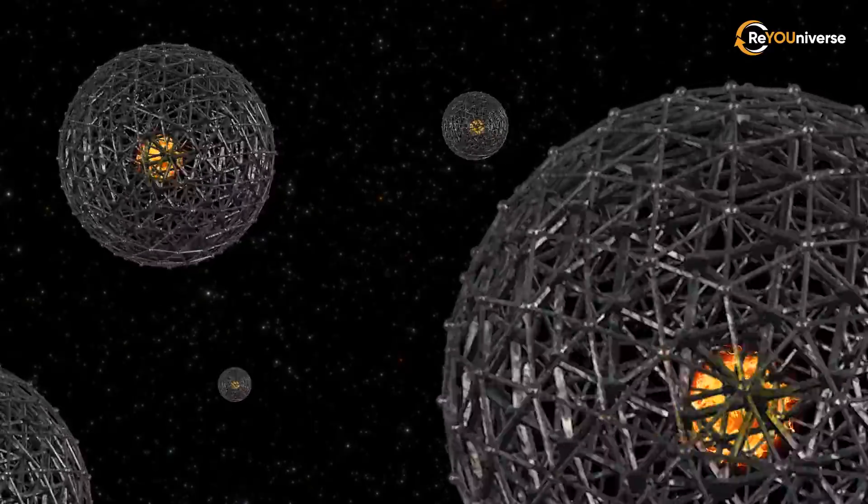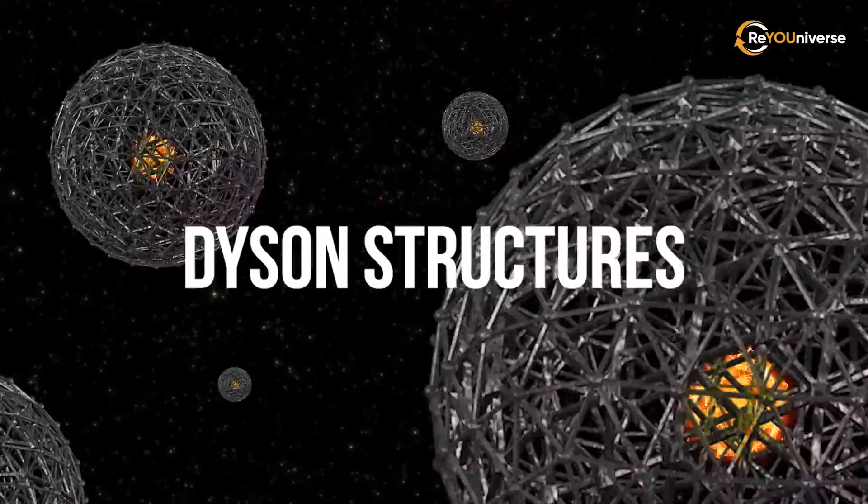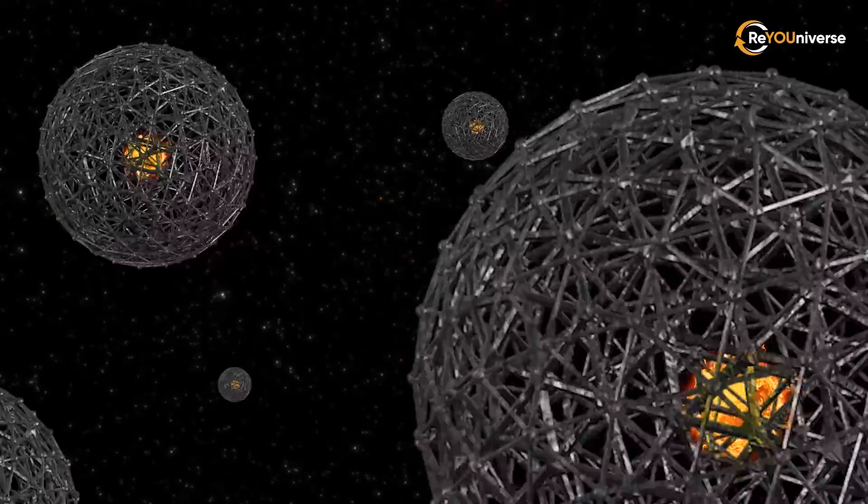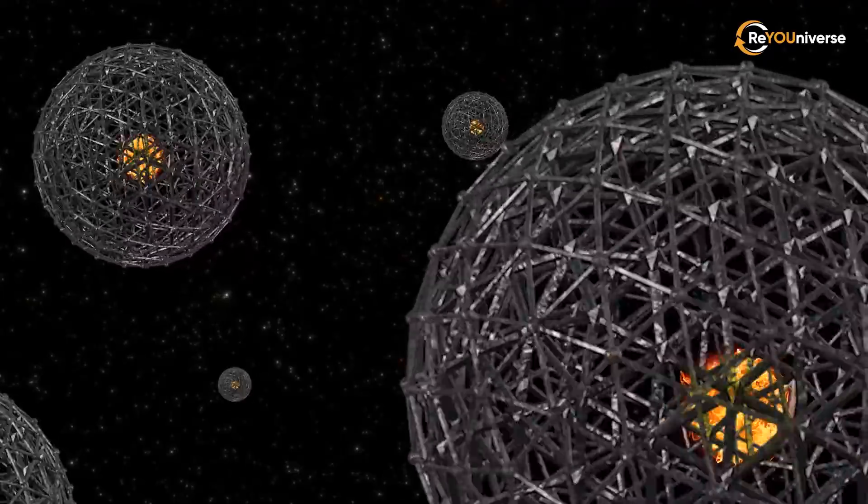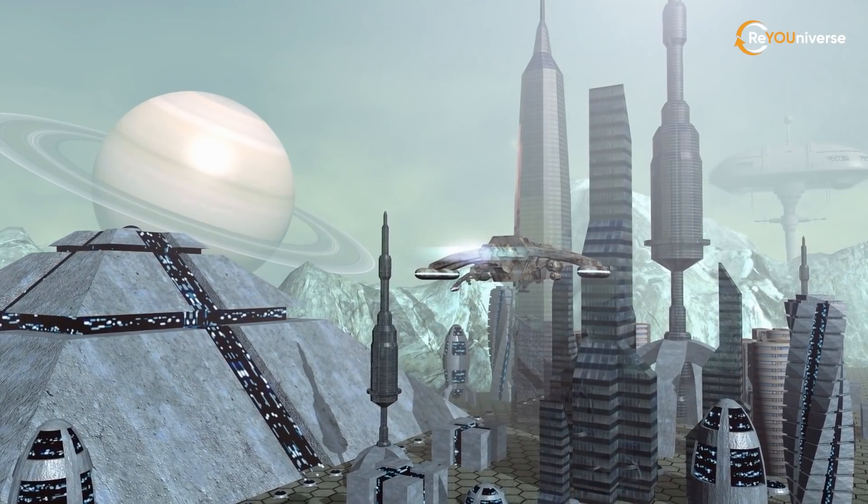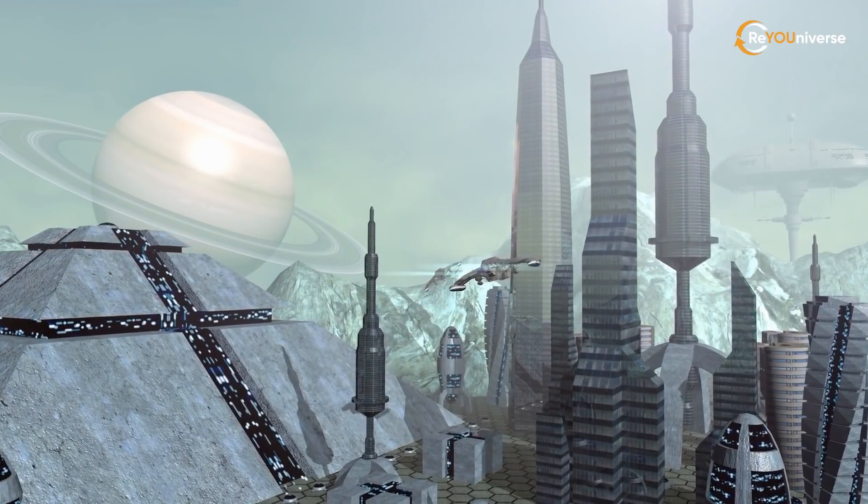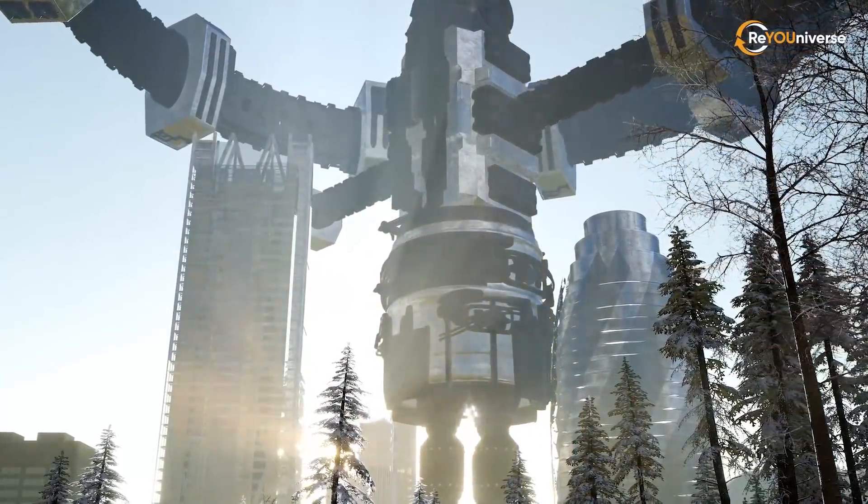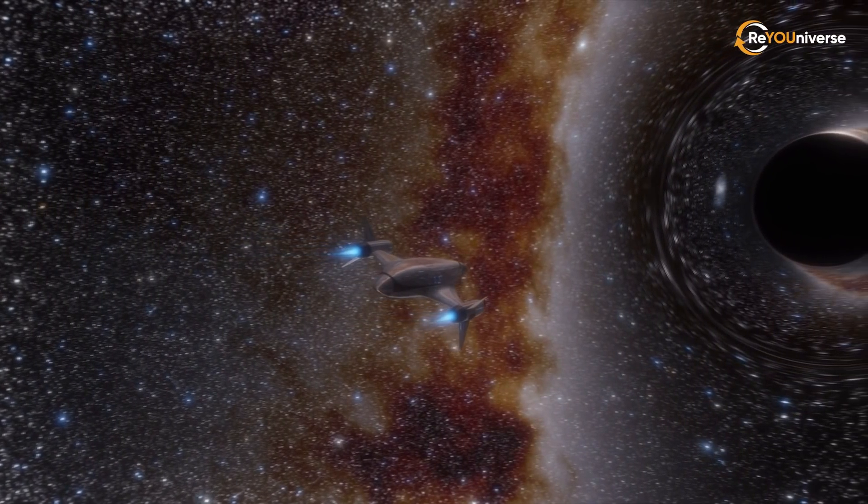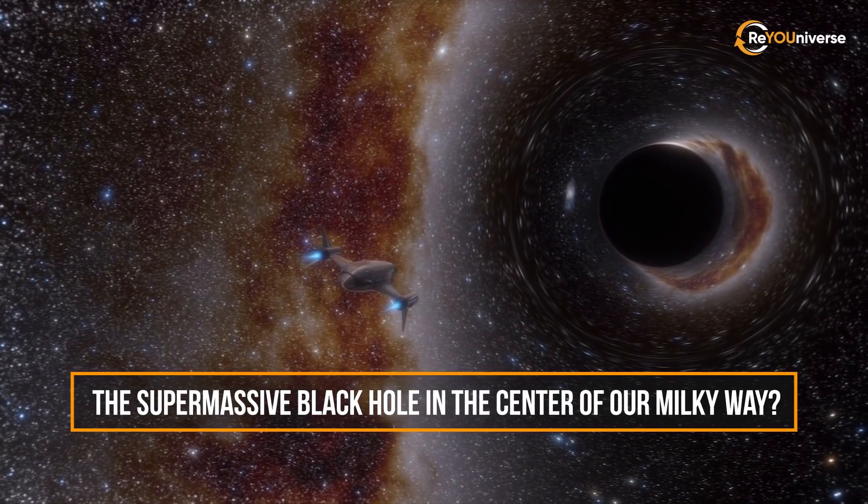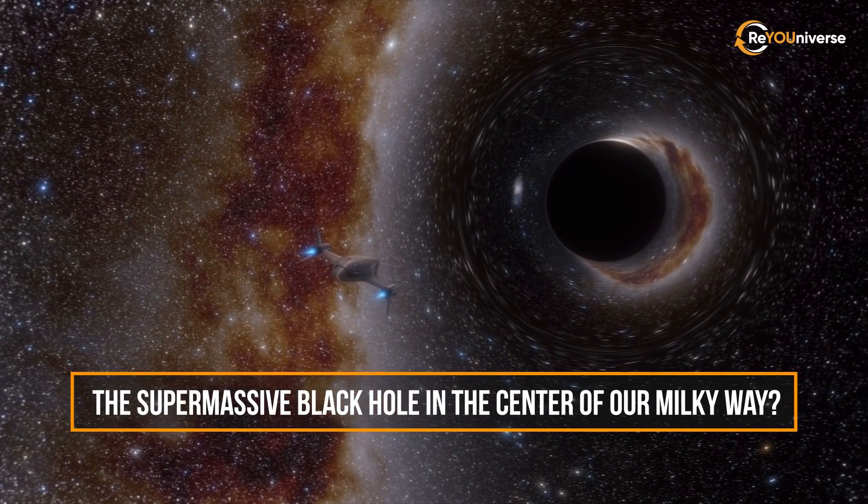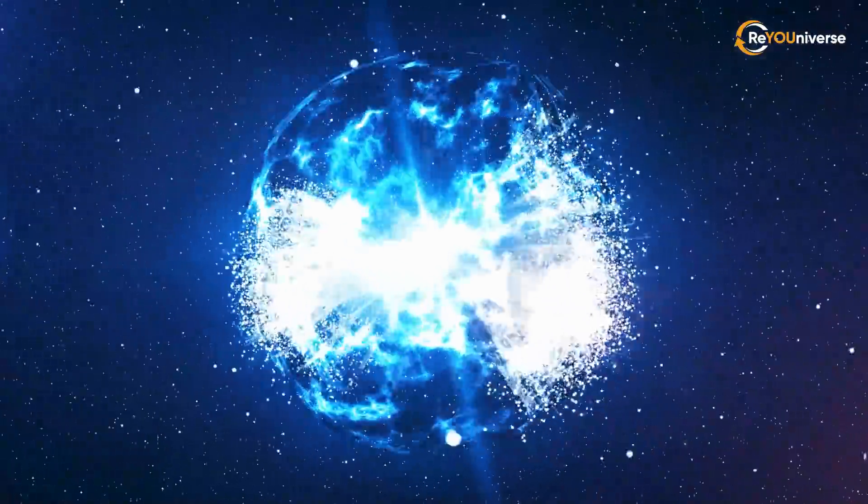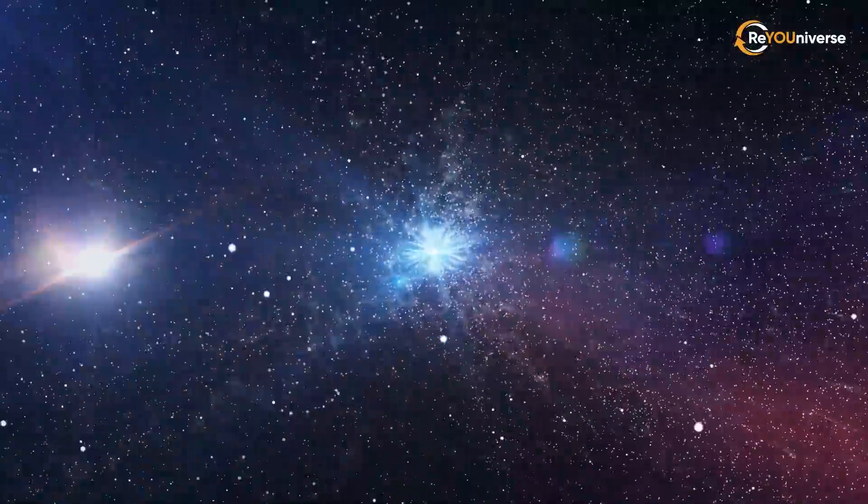Of course, one could simply surround the stars with the appropriate Dyson structures. As a result, the entire galaxy would be composed of Dyson sphere systems. Energy storage methods would move to a fundamentally new level. But who knows what else such civilizations might come up with? Perhaps they can somehow use the energy released near the supermassive black hole in the center of our Milky Way. Or maybe they can use the energy generated by supernova explosions. One can only speculate.